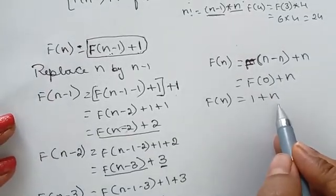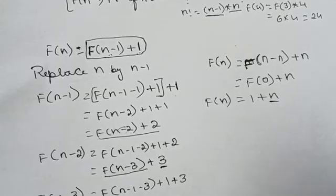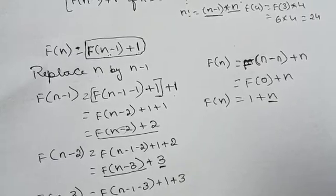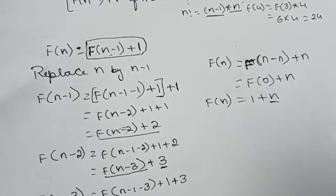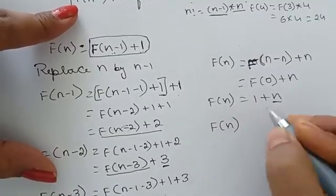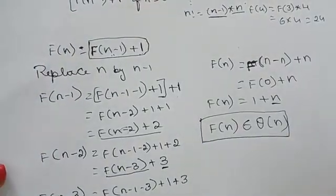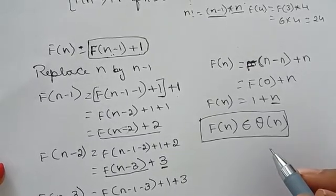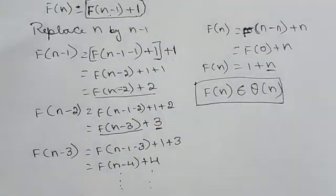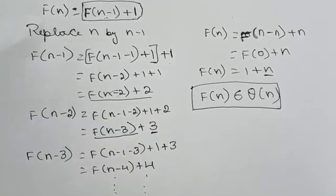So it takes n number of steps to compute this. For the asymptotic notation, since we are continuously computing all numbers — not stopping at the first, last, or middle — it is not a best case or worst case scenario. It is the average case. Therefore f(n) belongs to Θ(n). This is the mathematical analysis for computing the factorial of n numbers. In the next video, we will look at Tower of Hanoi.